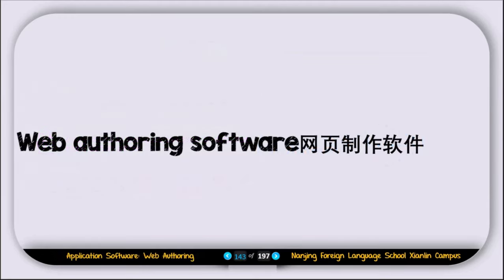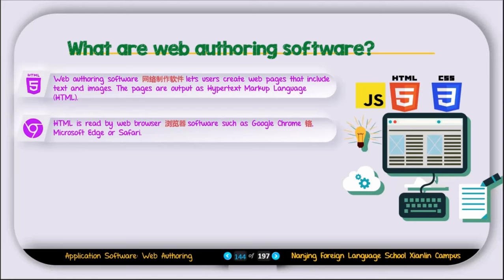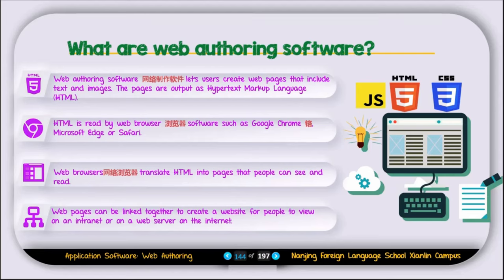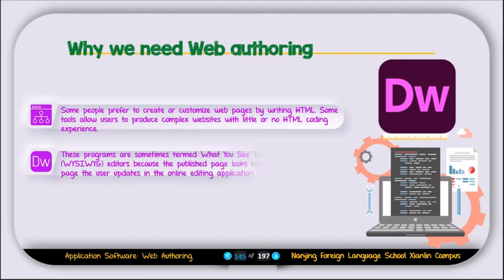The next type of application software is called web authoring software. Web authoring software lets users create web pages that include text and images. The pages are output as HTML — hypertext markup language — which is read by browser software such as Google Chrome and Microsoft Edge. Web browsers translate the HTML pages so people can see and read them. Web pages can be linked together to create a website viewed on an intranet or on a web server on the internet. Some tools allow users to produce complex websites with little or no HTML coding experience — these are sometimes called WYSIWYG editors.